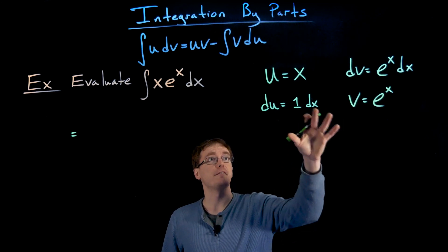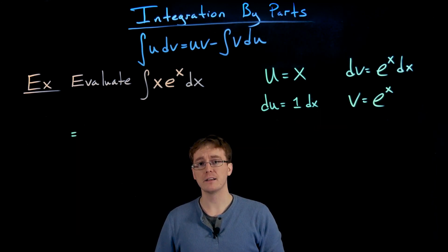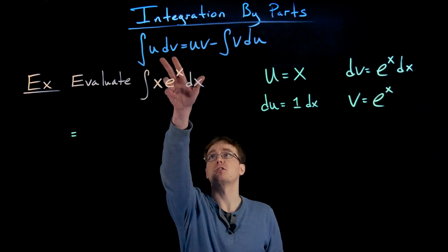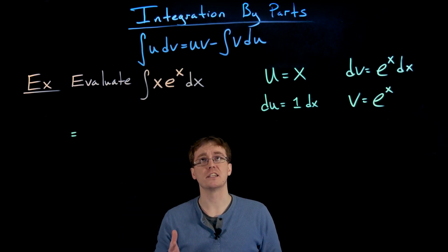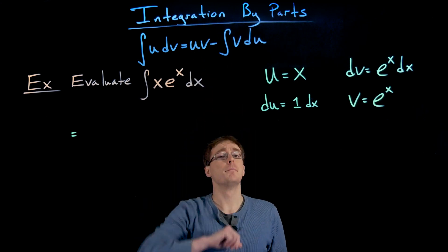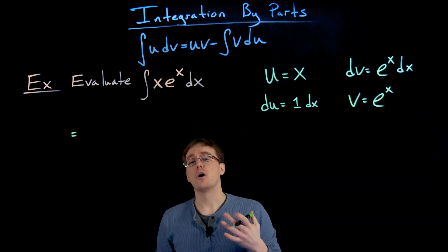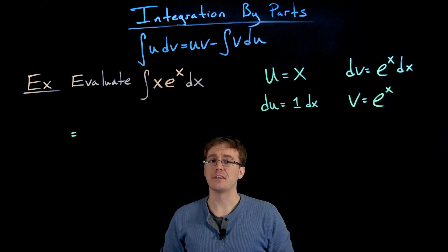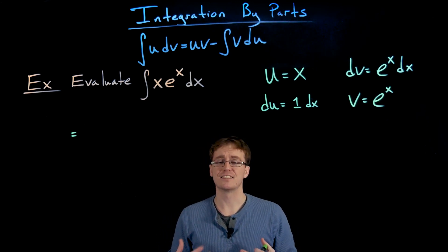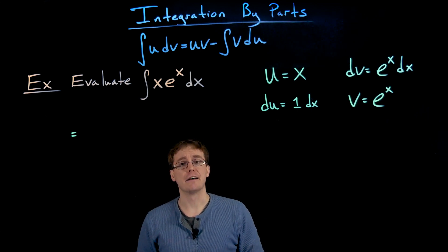We've now identified all the pieces required for our integration by parts formula, so let's plug them in. The formula allows us to re-express this integral as the product of u and v minus the integral of v times du. The hope is that this new integral is simpler and can be evaluated with much less effort.